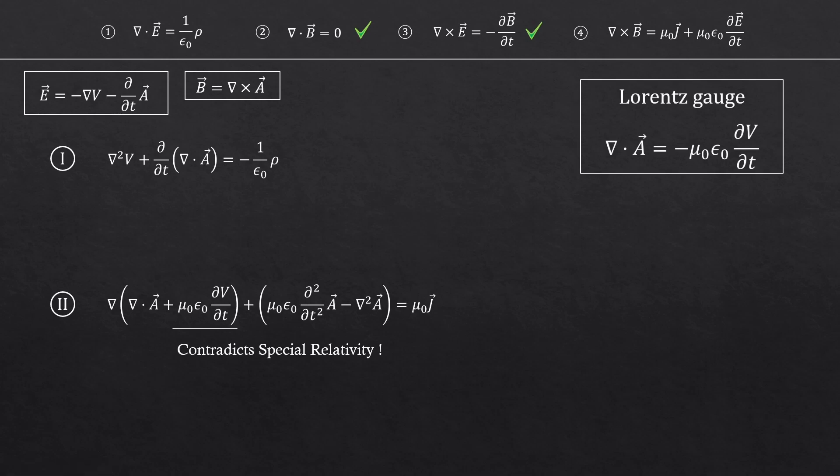This is called the Lorentz gauge. But are we even allowed to do that? Just because we want it? Yes, surprisingly, this gauge does not change or affect any other existing formulas in physics. And apparently, it works out beautifully.